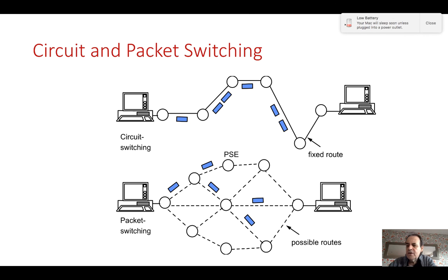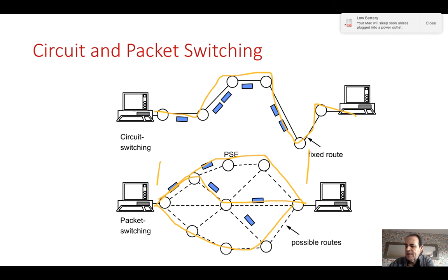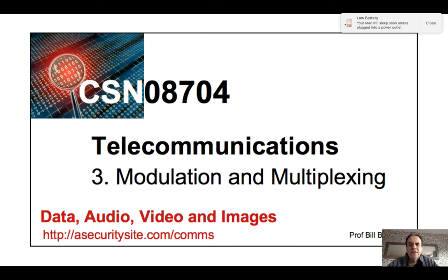Another key concept is circuit switching versus packet switching. Circuit switching creates a virtual circuit between two nodes. Packet switching allows a packet to take any route through the network as long as it gets from one place to the next. That's been an introduction to modulation and multiplexing.